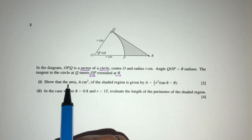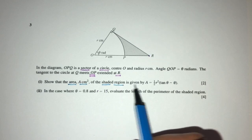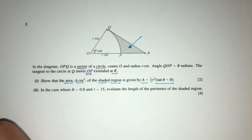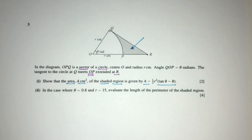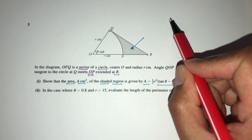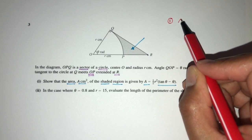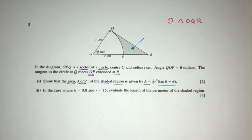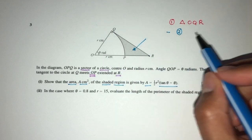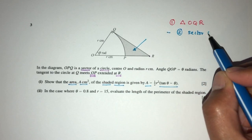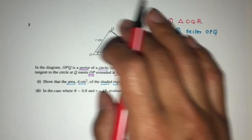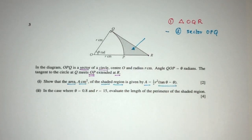So part one, we have to show the area A of the shaded region is given by this expression. We have to think step by step. Logically, we can first find the area of the triangle OQR — that's step one. Then we can minus the area of the sector OPQ, so that the remaining area will be the one that we need. Find the big one, minus the small one.